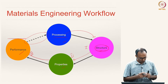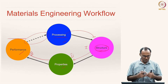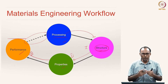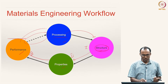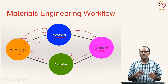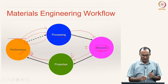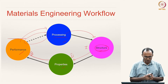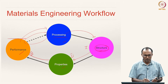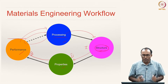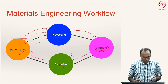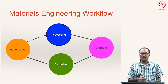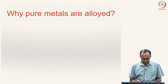Now, once we look at the performance, let's say the performance of the component is not up to mark and we need to enhance it — that input can possibly be given back to the processing, and we can change our processing route in order to get a structure that would give the required performance. In that sense, although it is not a closed loop, this dashed line can be thought of as feedback from the performance step to improve the processing step. In this module we will actually be discussing the phase diagrams, which primarily addresses the processing part of the PSPP diagram.